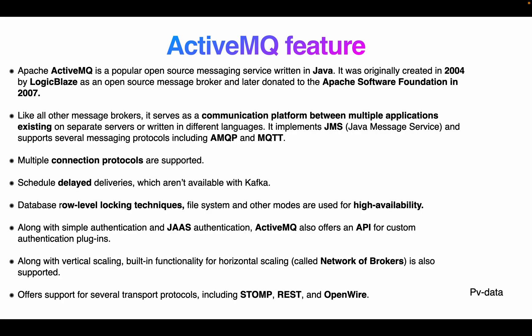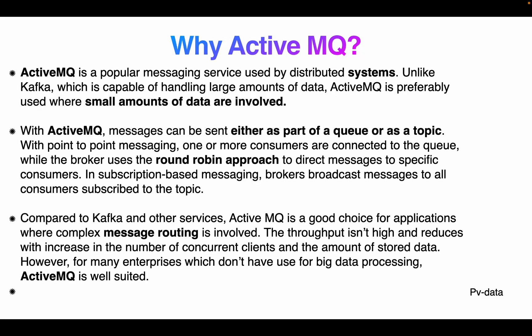ActiveMQ uses Java Message Service and can also deliver delayed data. It's a popular messaging service for distributed systems, similar to Kafka. Unlike Kafka, which is capable of handling large amounts of data, ActiveMQ is preferable when small amounts of data are involved. If you have a very small dataset use ActiveMQ; if you have large datasets, use Kafka.